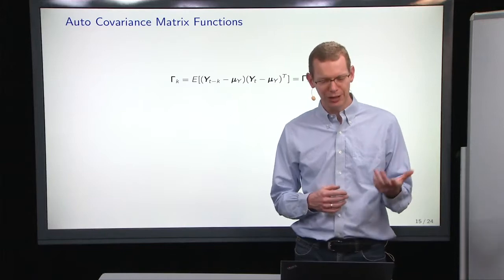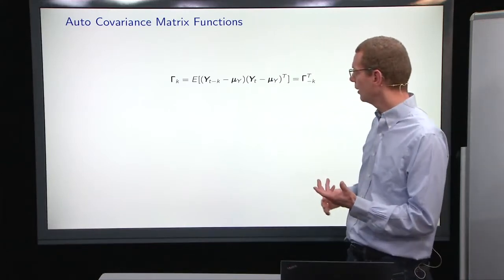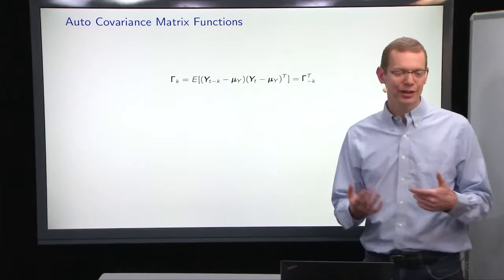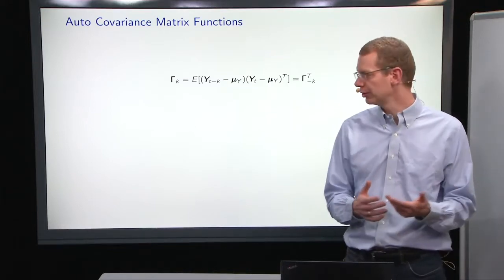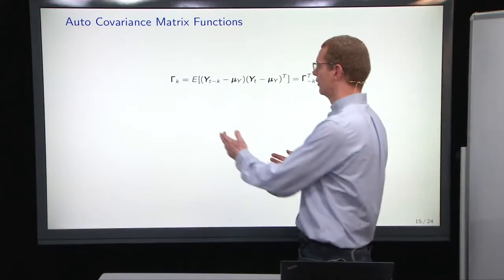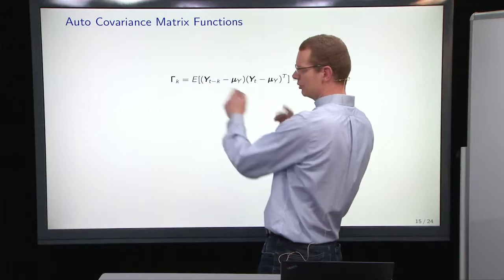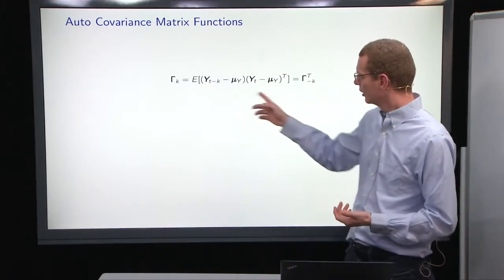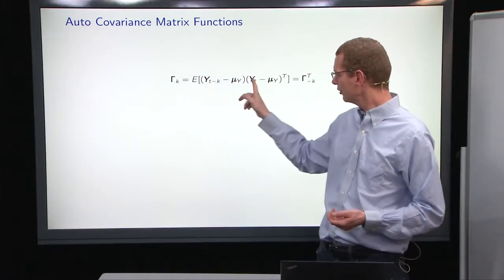The auto covariance matrix function is the next part, and how is that different from the matrix formulation to the univariate formulation? The expectation here pretty much looks the same as in the univariate case. The main difference is that now everything is vectors here.